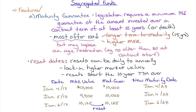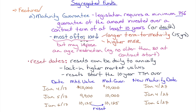Let's look at the maturity guarantee. Legislation requires a minimum of 75% guarantee of the amount invested over a contract term of at least 10 years (or death). Most companies offer 100% — it's a competitive marketplace — but with some conditions: a longer term to maturity (e.g., 15 years instead of 10), higher management expense ratios because you're getting more benefit, and possibly an age restriction such as no older than 80 at contract start.